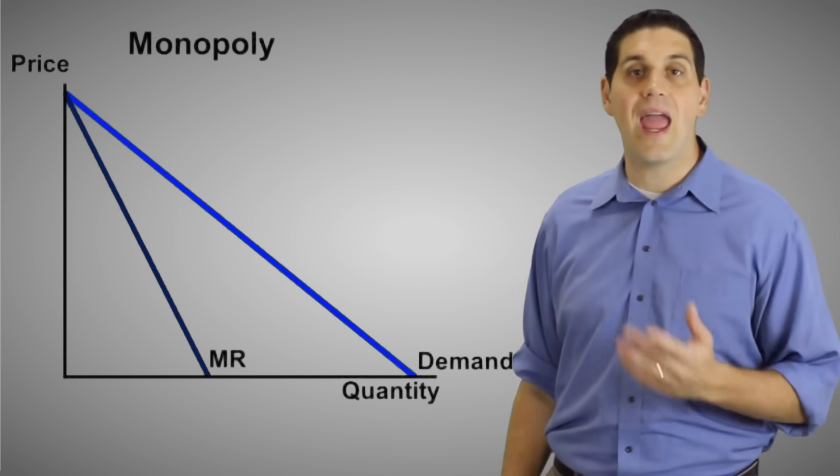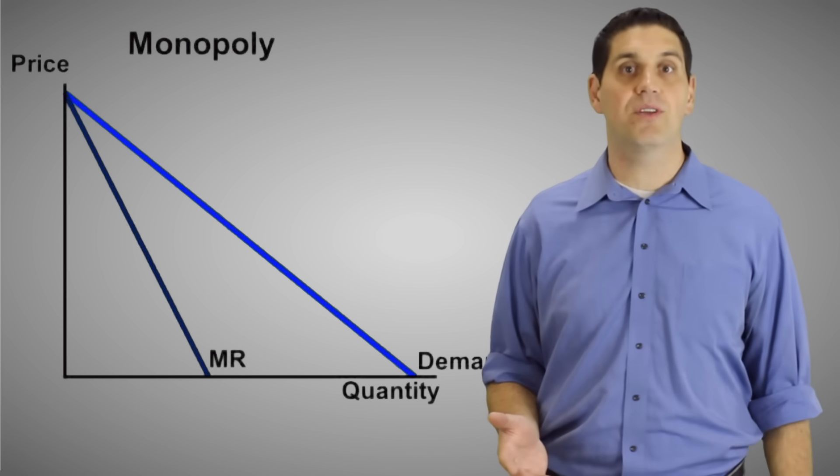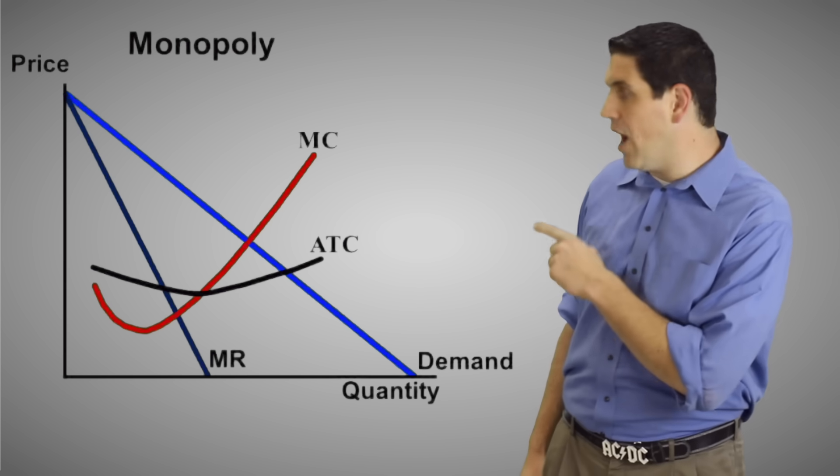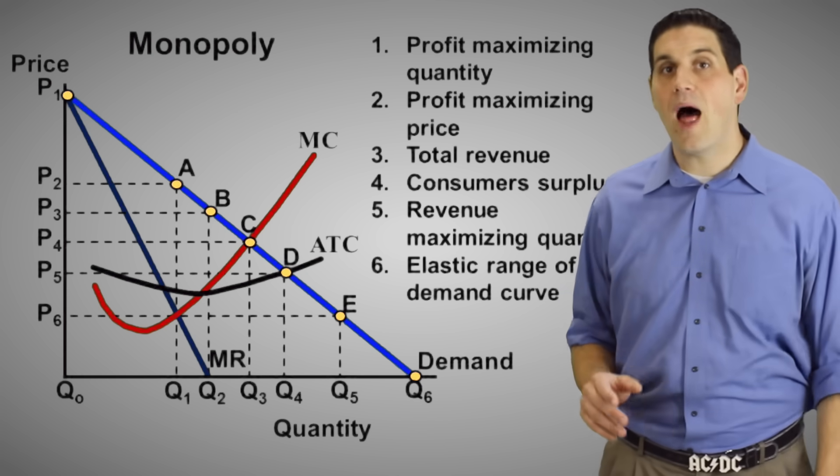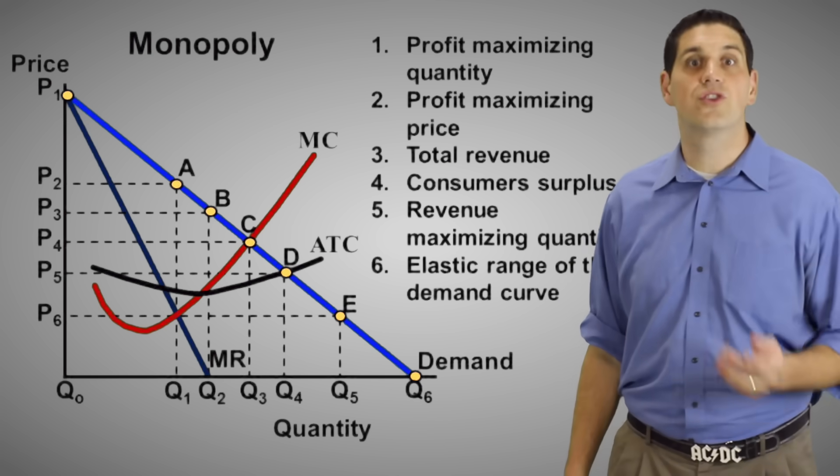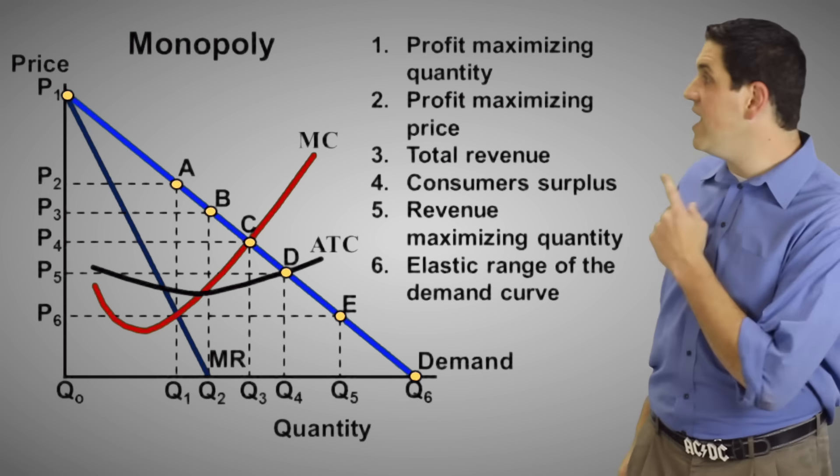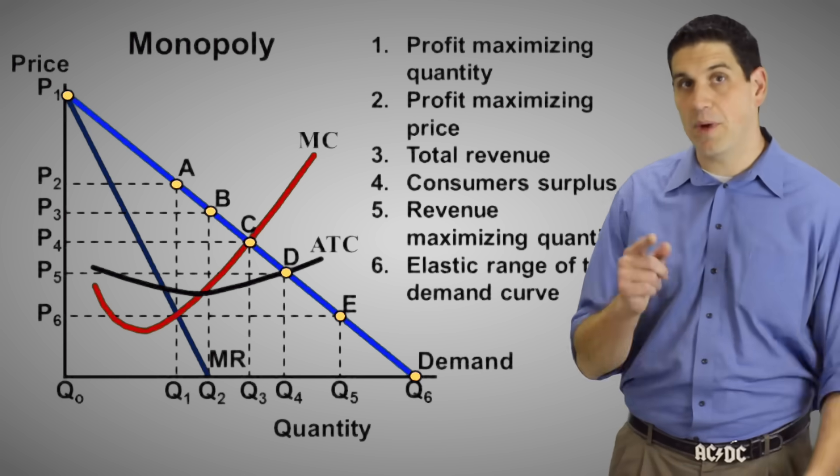Now the marginal cost curve and the ATC is exactly the same as perfect competition. MC goes down and up and ATC goes down, hits a minimum, then goes back up. And that is the graph for a monopoly. Now it's time to apply what you've already learned in previous videos to a monopoly. I want you to answer these six questions. Pause the video and then I'm going to go over them.